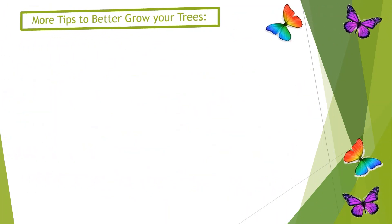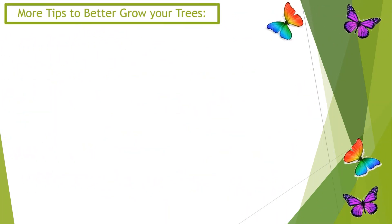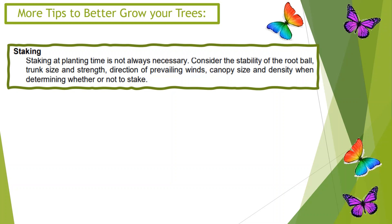Tip 16 and 17: Staking — staking at planting time is not always necessary. Consider the stability of the root ball, trunk size and strength, direction of prevailing winds, canopy size, and density when determining whether staking is needed.